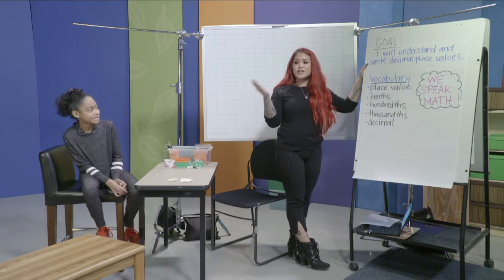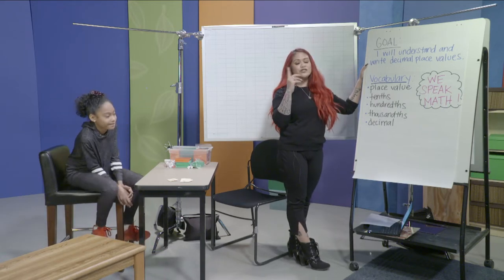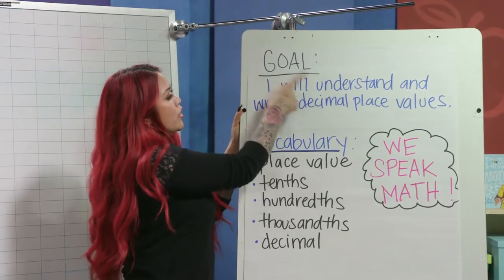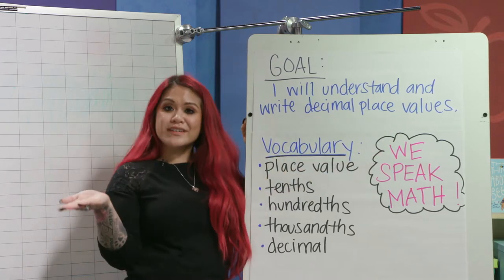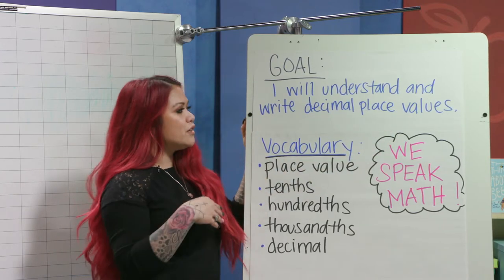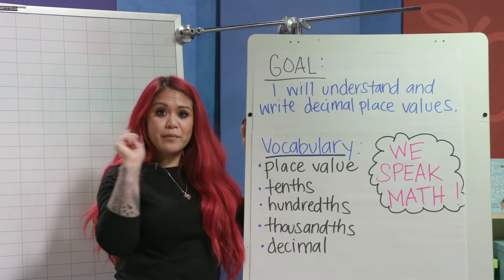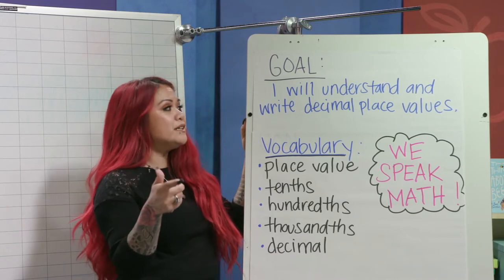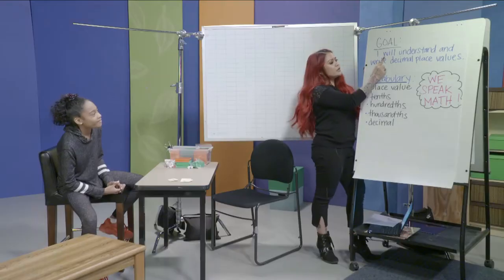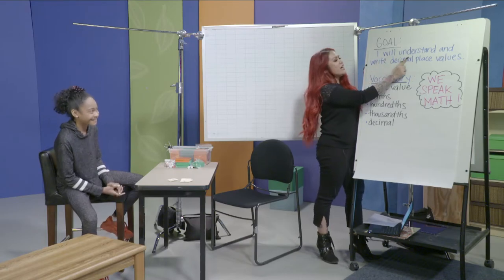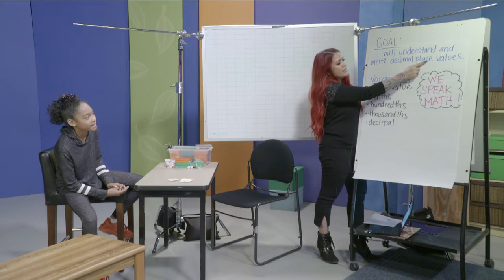So today the goal is — I'll read it first and then you can re-read along. The goal: I will understand and write decimal place values. So Ajene is going to help me out and she'll be my one student today, but you are also my students at home. Please choral read along with us. I will understand and write decimal place values.